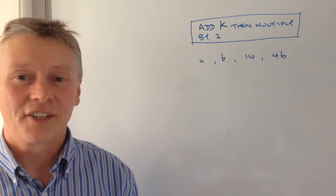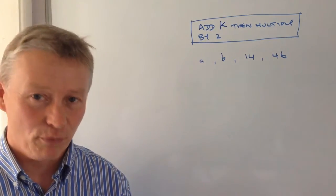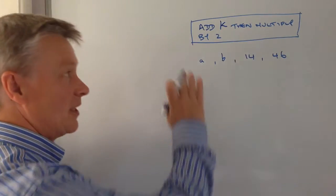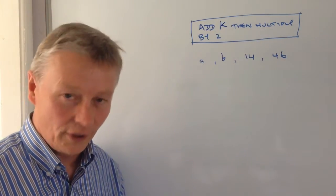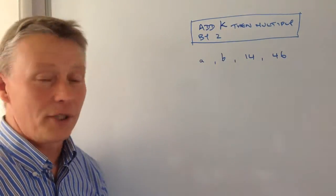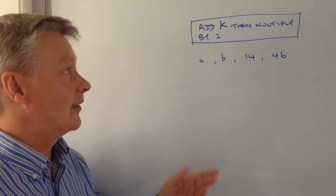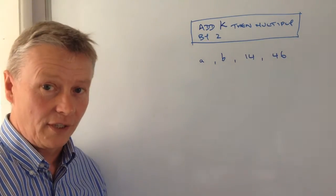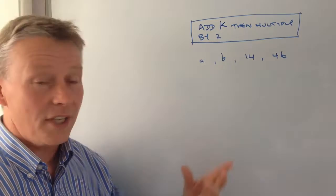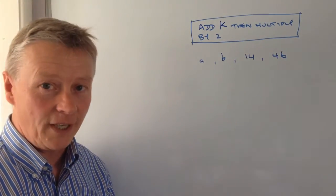Hi, this is the second video in the series on solving sequence problems. In this particular question we've been given a rule, and the rule is we're going to add k, which is a value, and then multiply by 2. We're given two numbers in the sequence and we're asked to work out a and b.